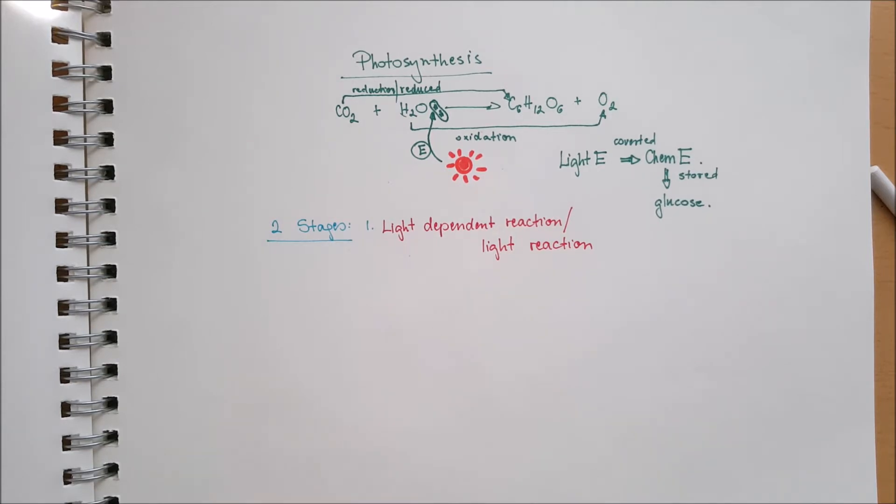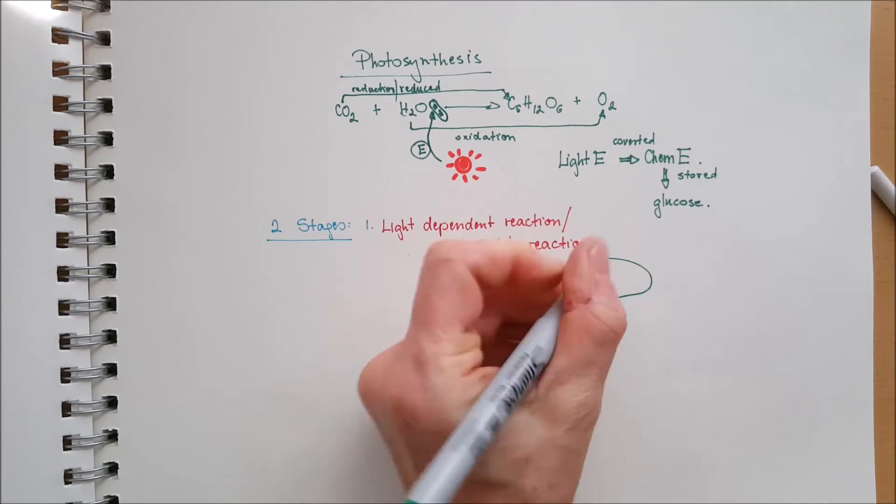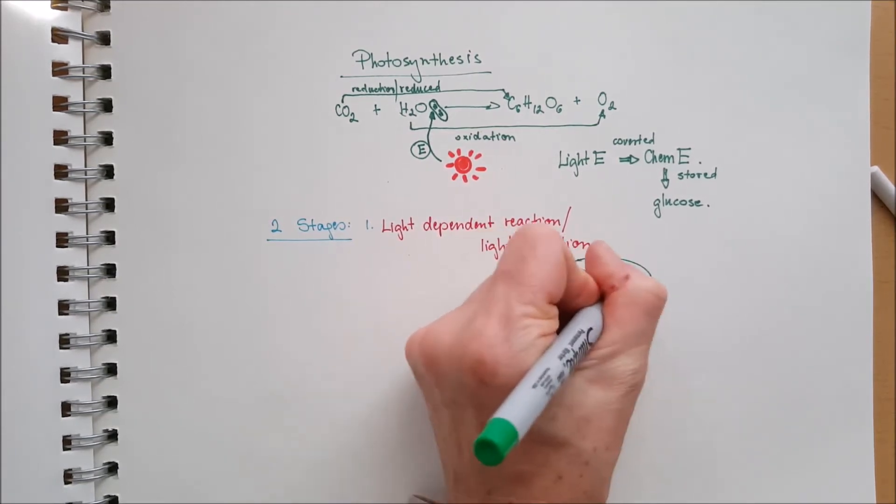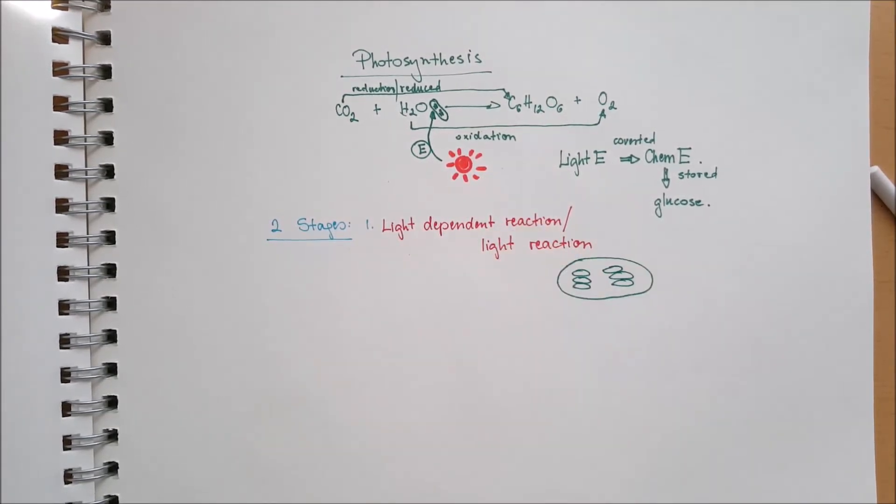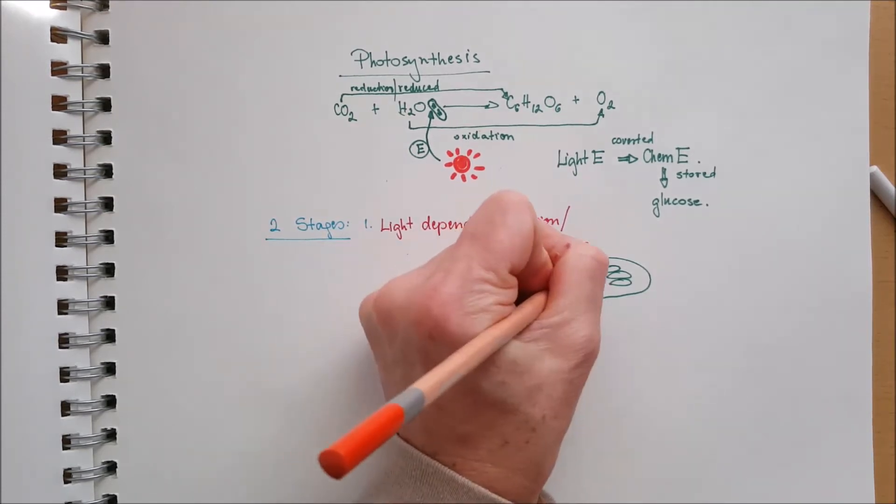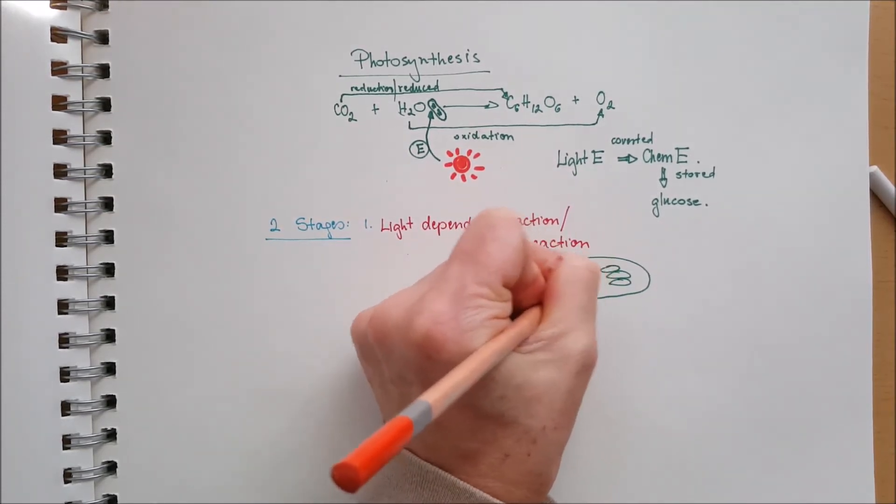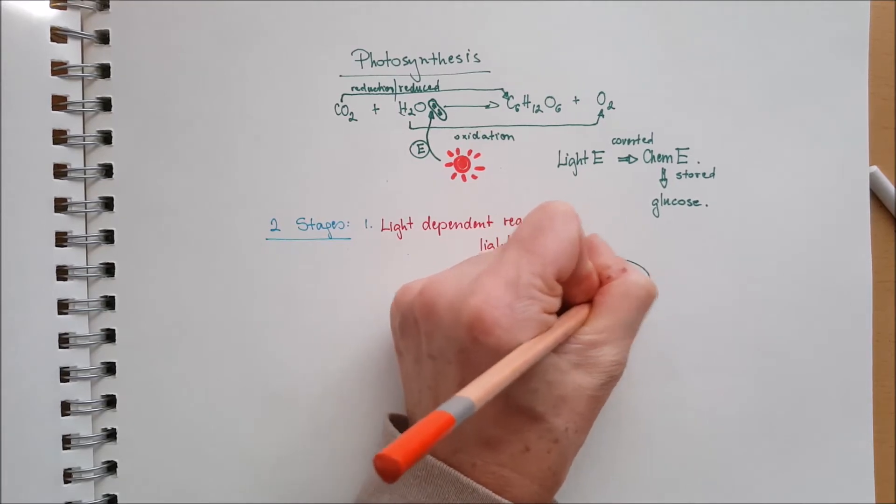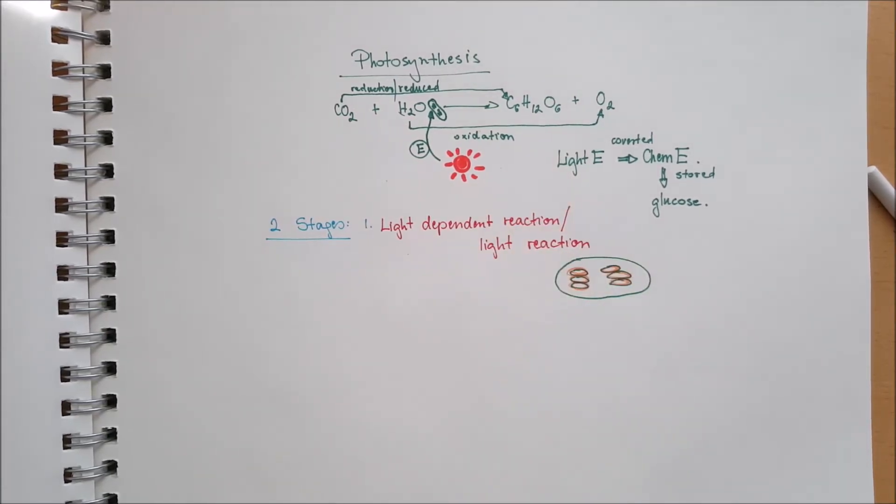Or shortened version is the light reaction, that is the light is necessary to be present for this reaction to happen. And it happens in the chloroplasts and in the thylakoid membranes, what I just drew over with orange. So the thylakoid membranes, the enzymes are in the thylakoid membranes.